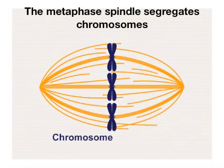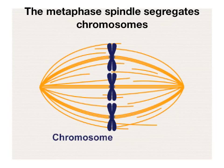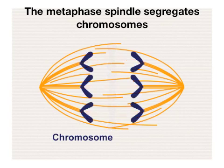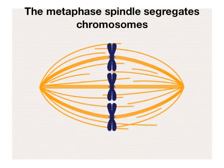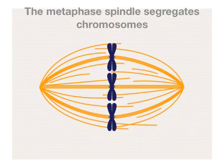The metaphase spindle is a micron-sized football-shaped structure that is assembled in a dividing cell to equally partition replicated DNA between its two daughters. Mistakes in this process are catastrophic and have been linked to disease. To segregate chromosomes properly, the metaphase spindle has to generate forces.